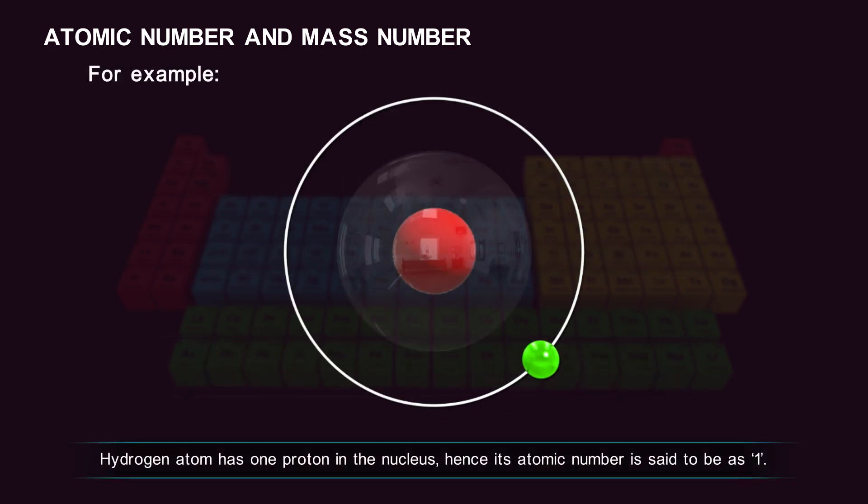For example, a hydrogen atom has one proton in the nucleus, hence its atomic number is one.